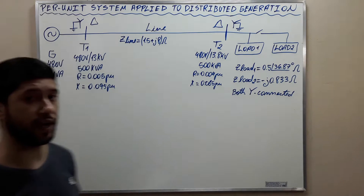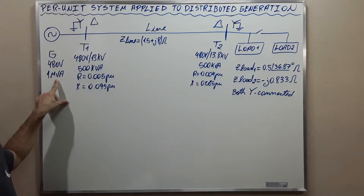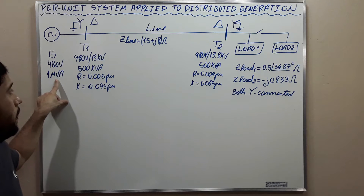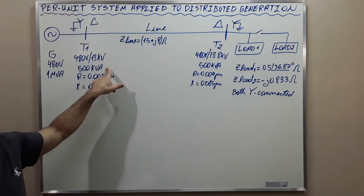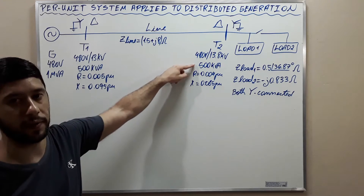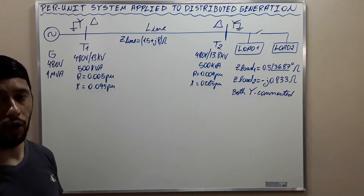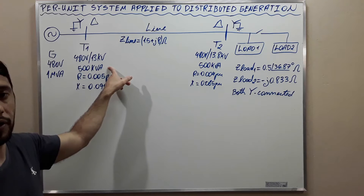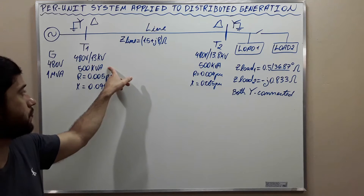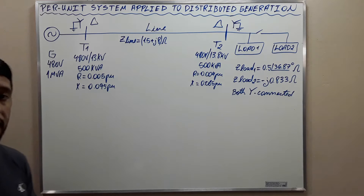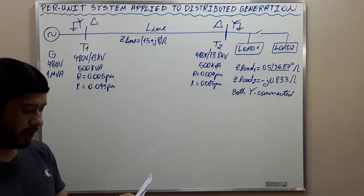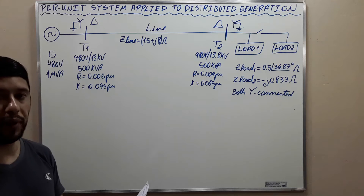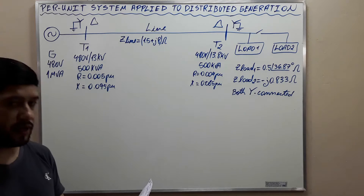Pay attention that although the generator is rated at 1 MVA, the transformers are rated at 500 KVA. Therefore, we need to pay attention to not exceed the rated apparent power of the transformers. Letter A: sketch the per phase, per unit equivalent circuit of this power system.